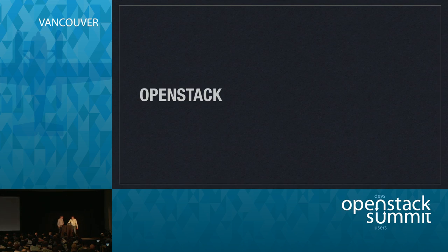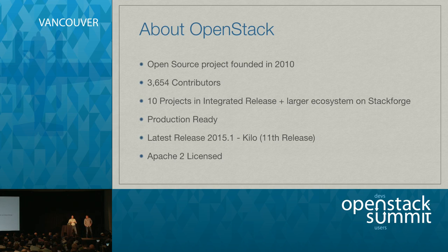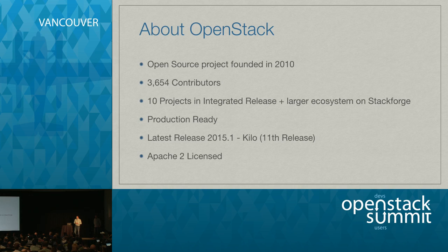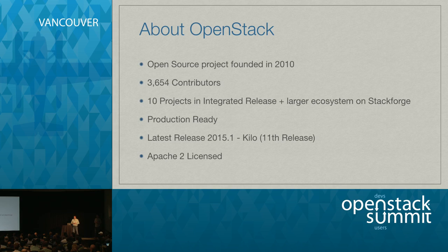So OpenStack — just to level set. OpenStack was a project founded in 2010. As of the Kilo release, we have 3,654 contributors contributing upstream into OpenStack projects. Ten projects in the integrated release, plus the larger ecosystem on StackForge — a pretty significantly large ecosystem. Production-ready cloud software, being deployed by a lot of different enterprises. The latest release, the 11th release, was Kilo, which was just recently released, licensed under the Apache 2 license.